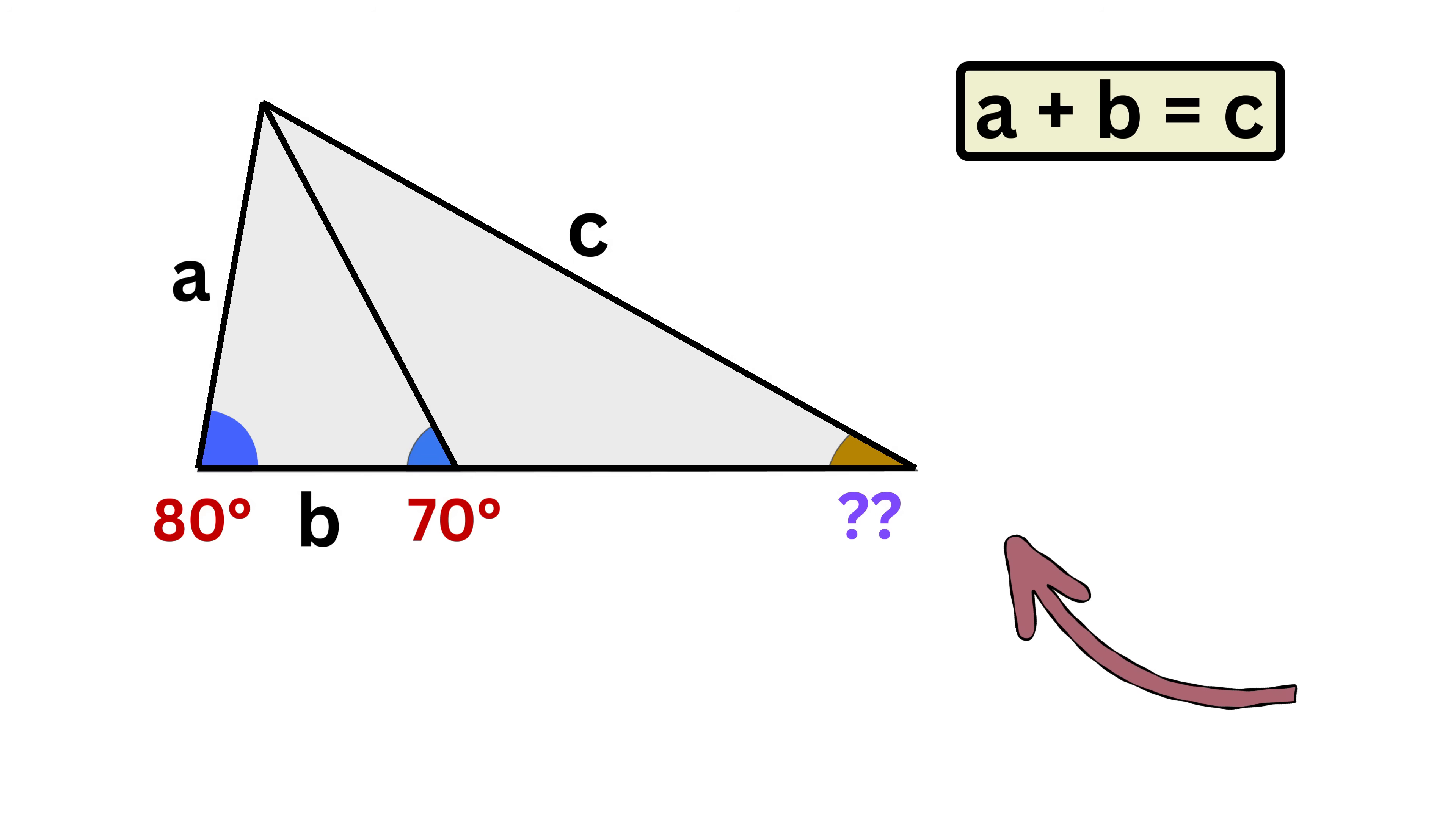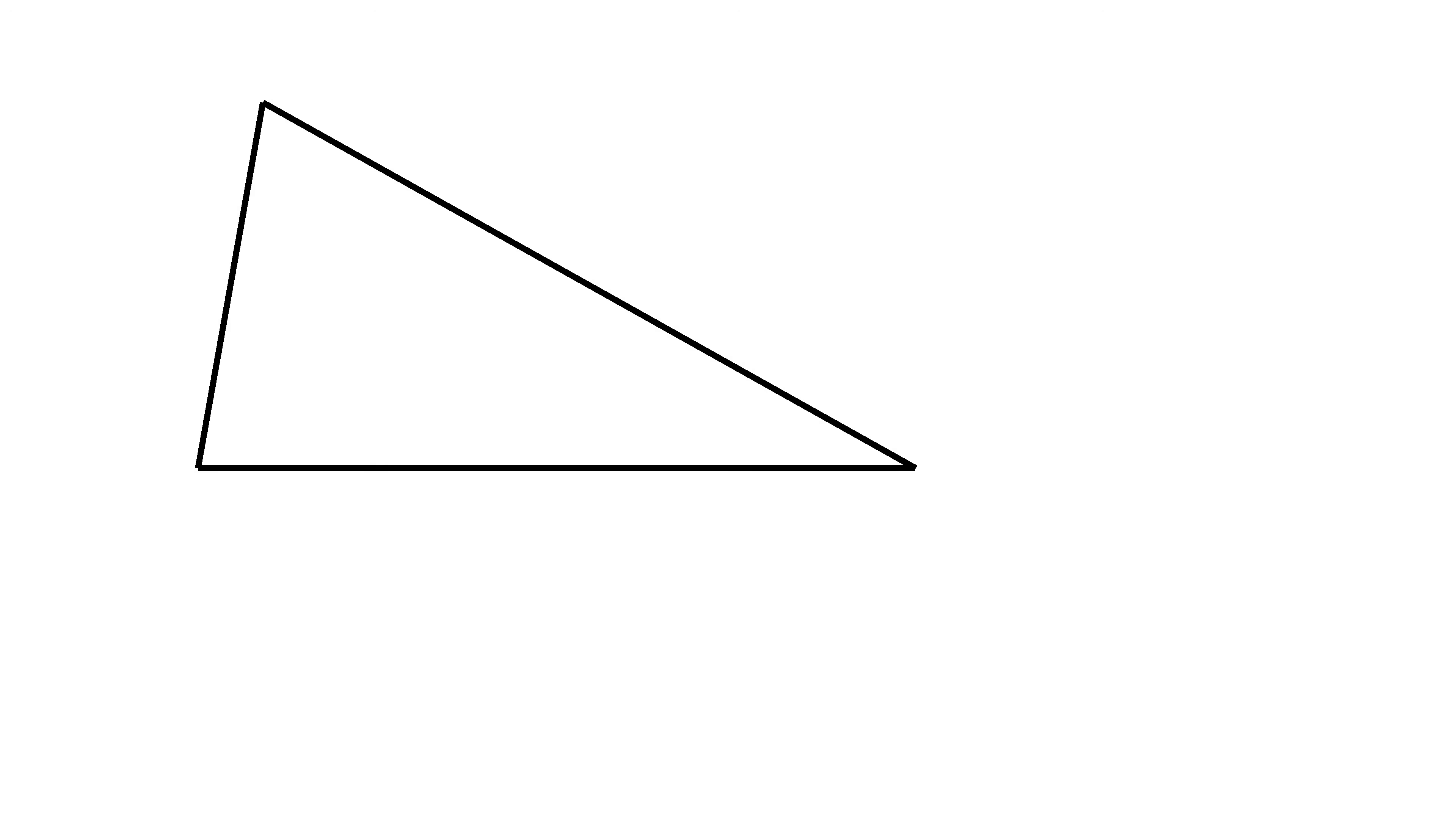This is an amazing geometry problem. We are given a triangle with vertices A, B, and C. From vertex A, a segment is drawn to the opposite side BC, and the intersection point is called D.